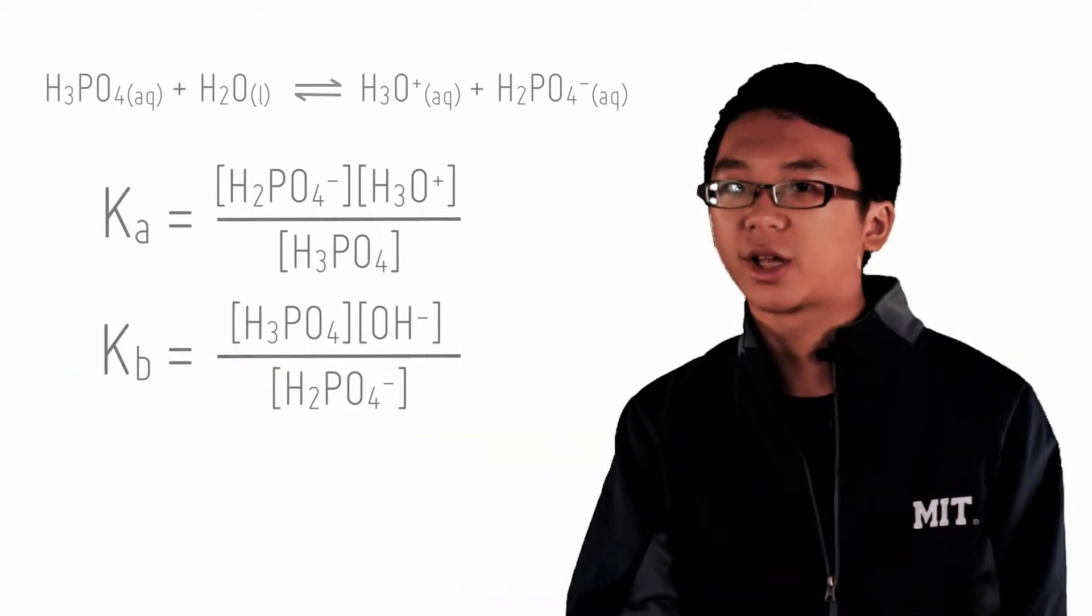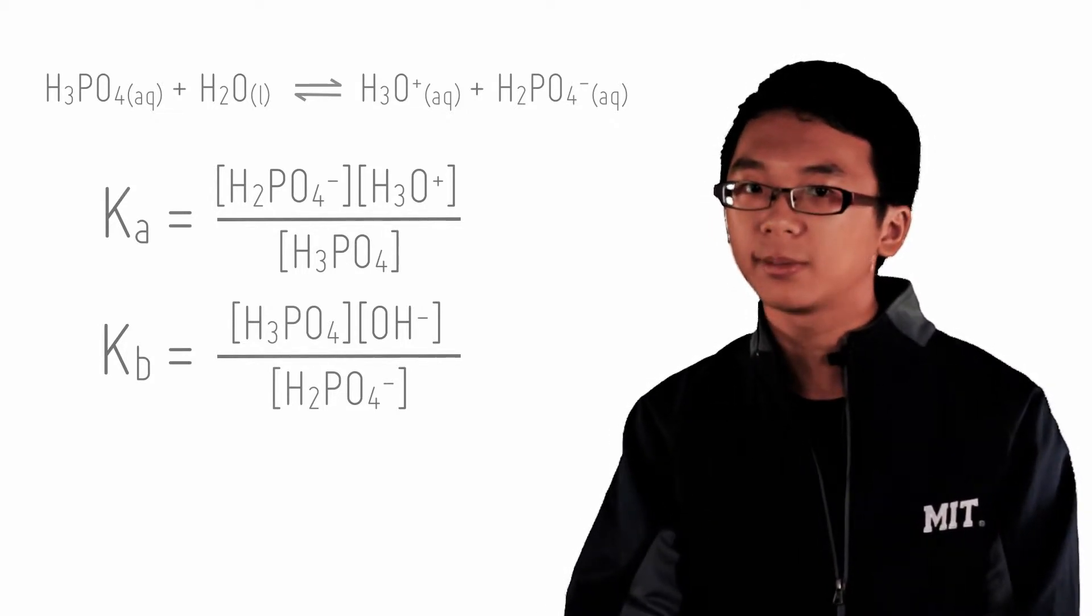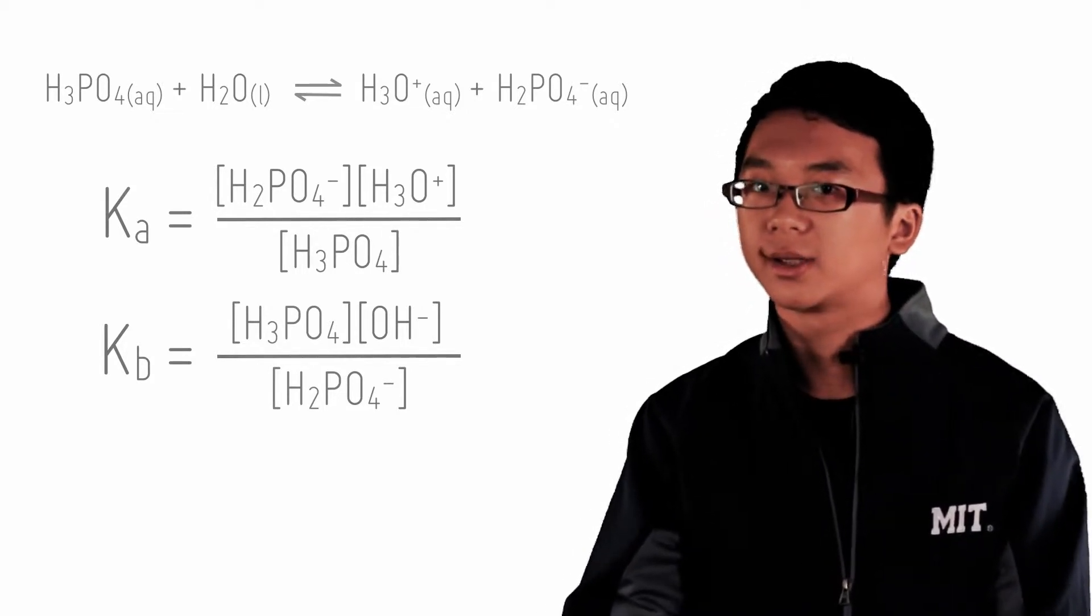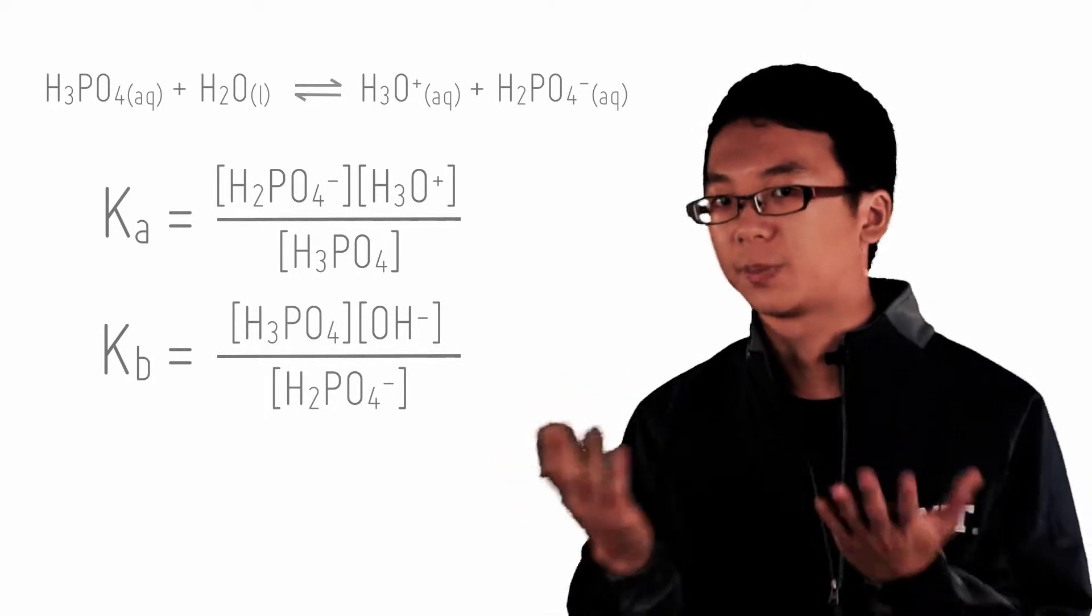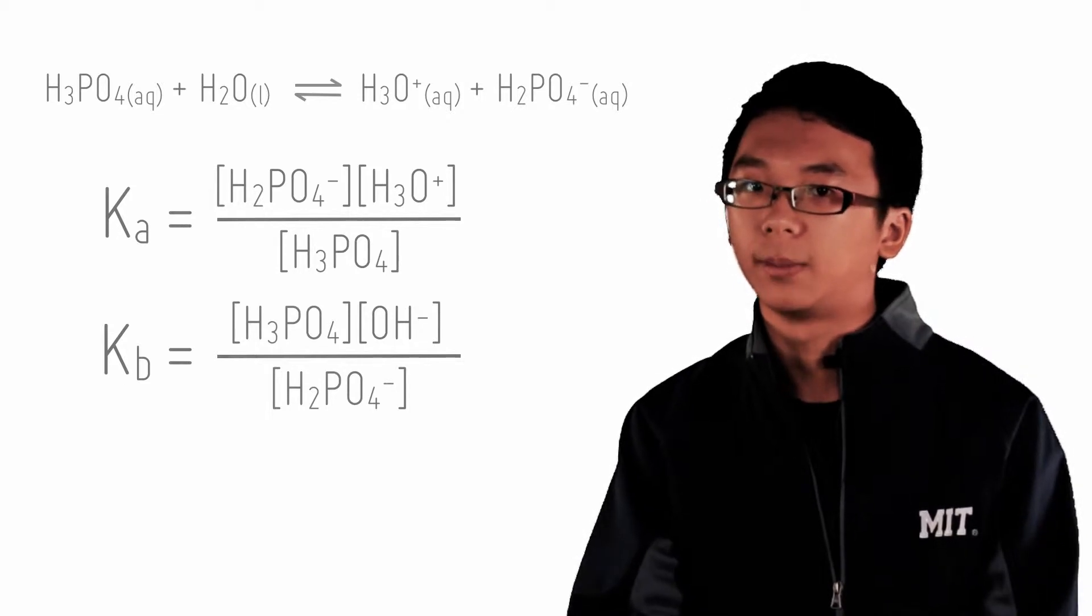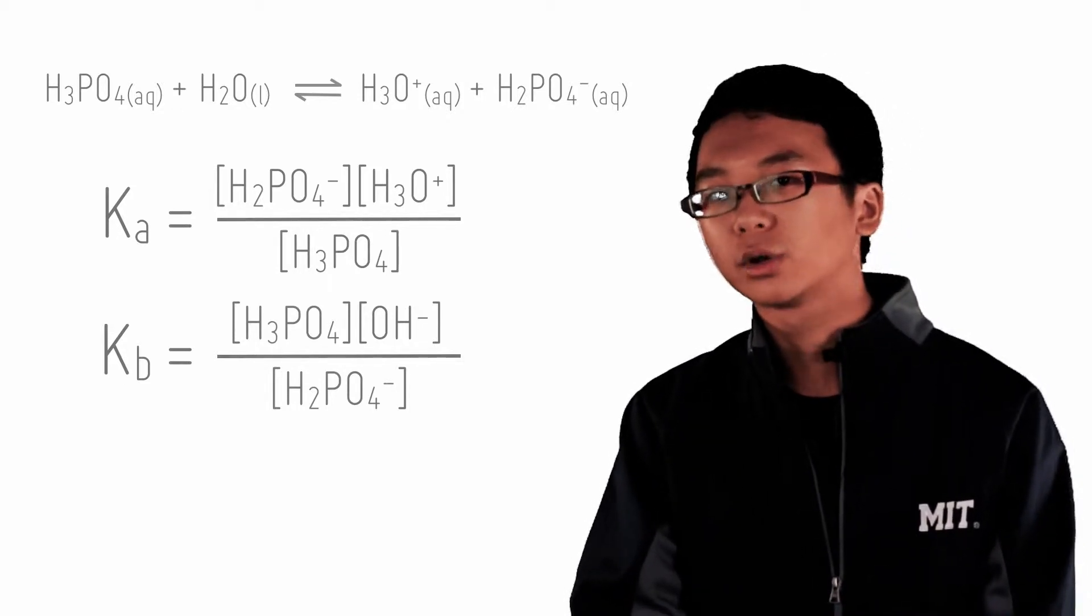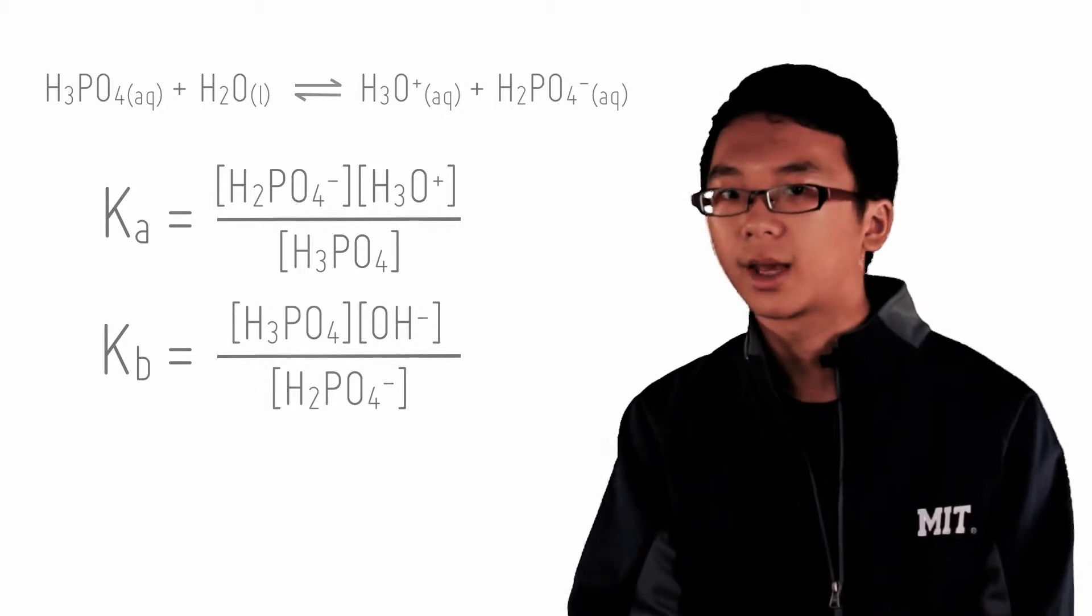The first reaction has the equilibrium constant Ka because of its acid dissociation. In your textbooks and notes, you might sometimes not see water. That is because the acid is represented by H+, and not hydronium. That's fine as well. The reverse reaction has the equilibrium constant Kb, of course, because it is a base reacting with water. So we have the equilibrium expression for Ka and Kb.